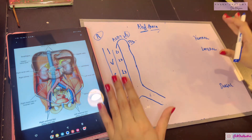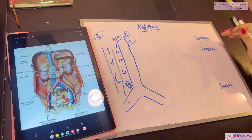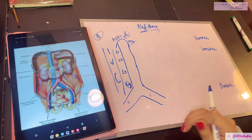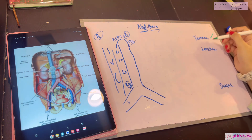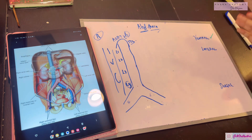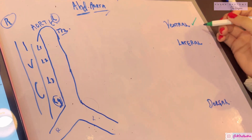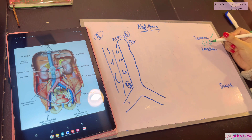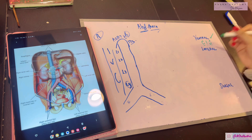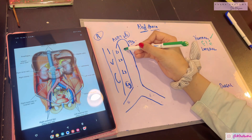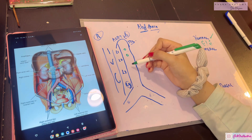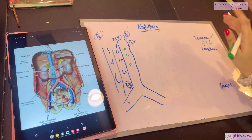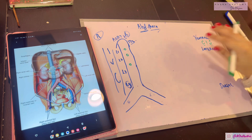Now let's talk about the branches of the aorta. The aorta gives ventral branches, lateral branches, and dorsal branches - from the front, lateral side, and posterior side respectively. The ventral branches are the visceral branches, which are unpaired. Their mnemonic is CSI: C for the celiac trunk, S for the superior mesenteric artery, and I for the inferior mesenteric artery. These are the unpaired visceral branches supplying the gut.